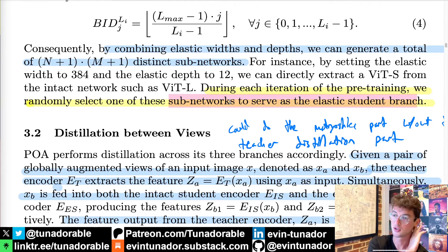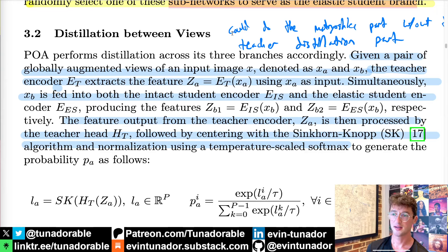And to be clear, all the splicing stuff during pre-training for every single iteration, what they are doing is randomly selecting one of the sub networks for the elastic student to use during that iteration of pre-training, which I believe means during every single batch.